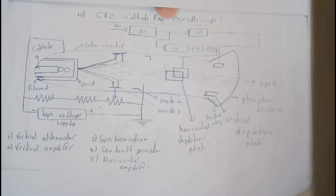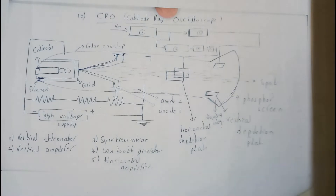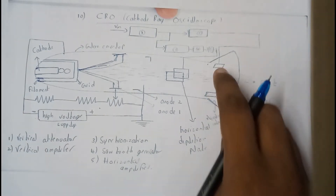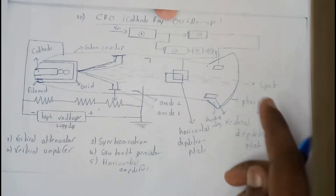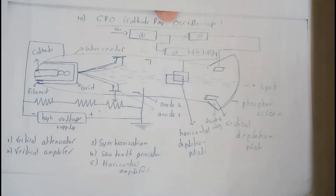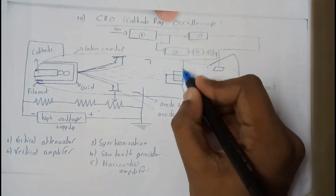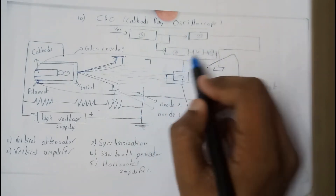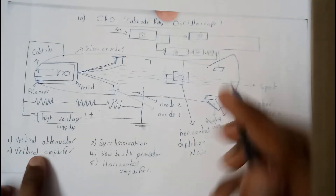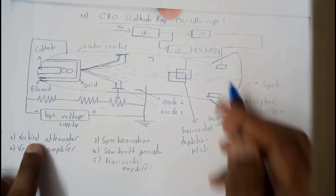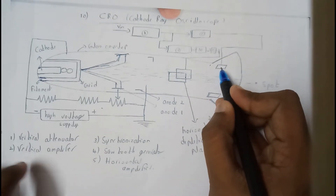We are having an external circuit for these horizontal and vertical plates — that's an important thing to know. For the vertical section, we will be having a vertical attenuator and vertical amplifier. I have written the names right here.